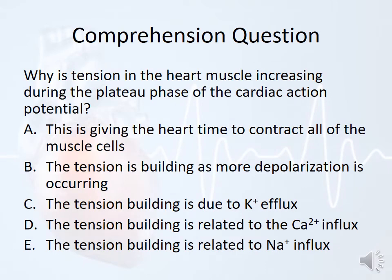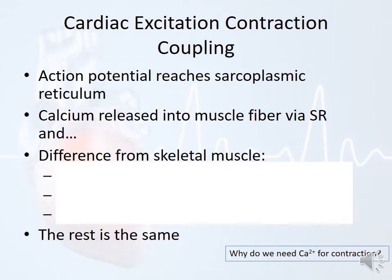Why is tension in the heart muscle increasing during the plateau phase of the cardiac action potential? The tension is building as that plateau phase goes on, during the same time that calcium is going into the cell. So D is the correct answer. The action potential reaches the sarcoplasmic reticulum, and calcium is released into the muscle fiber via the sarcoplasmic reticulum — that's all normal, just like in skeletal muscle.